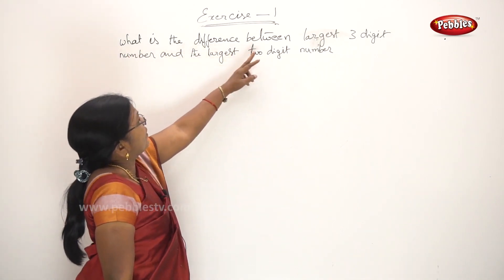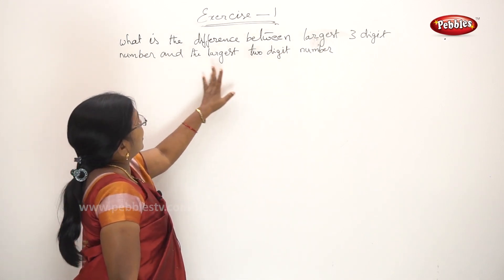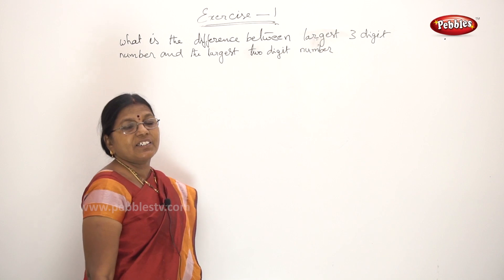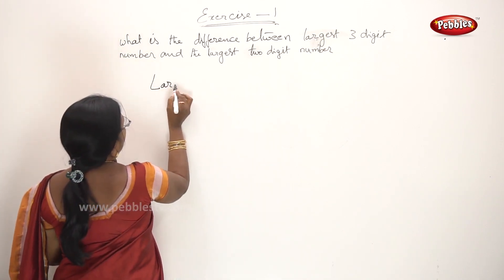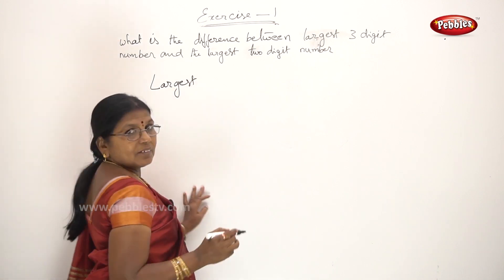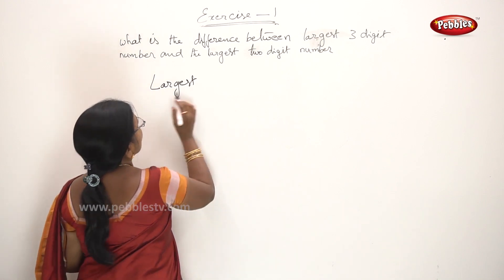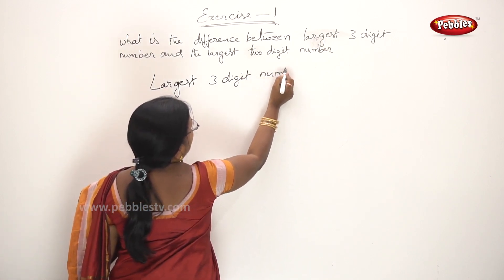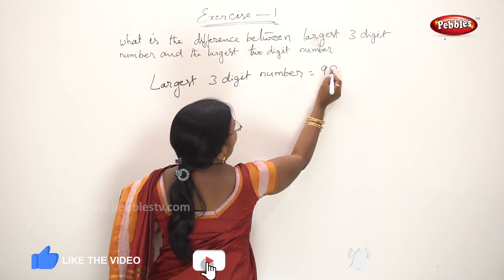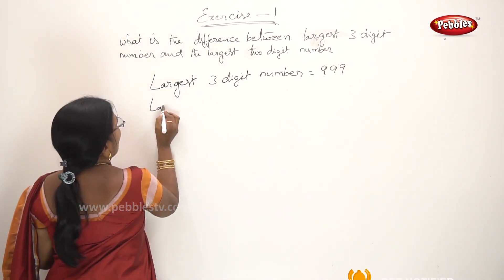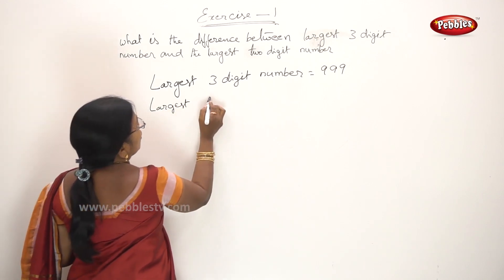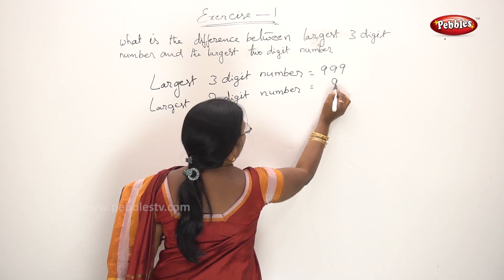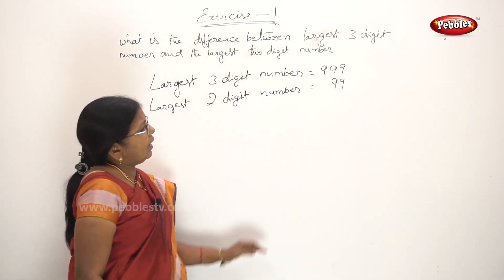Next question: What is the difference between the largest 3-digit number and the largest 2-digit number? Largest 3-digit number is 999.